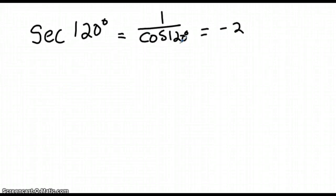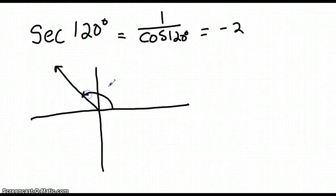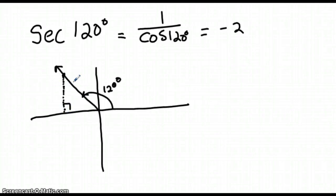Now if you aren't too keen on memorizing your trig functions — well, you should be — but if you happen to forget, let's use reference triangles. 120 degrees is right here on the coordinate plane, and some point is on the terminating side of this angle. You can make yourself a reference triangle. The angle of this reference triangle is 60 degrees.